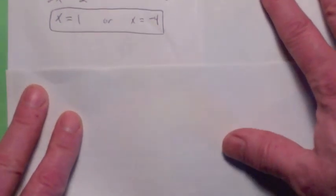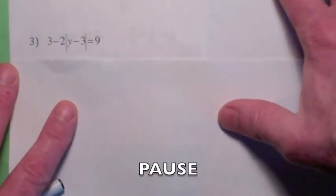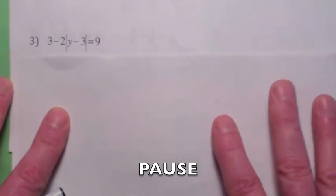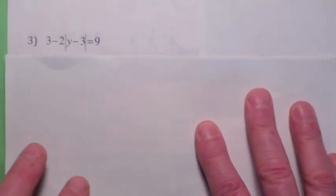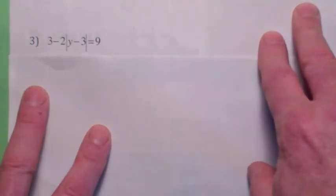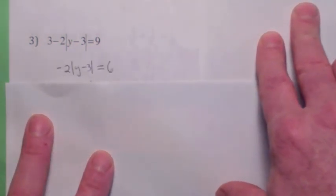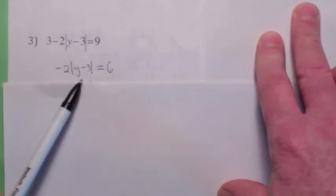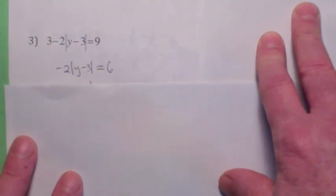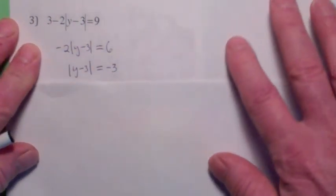Why don't you try this one. Go ahead and hit the pause button and see if you can do this one. I should have warned you, this is kind of sneaky. When you go to solve this, you should first subtract 3 from both sides. And then you should get the absolute value by itself. So you divide by negative 2 and you end up with this.